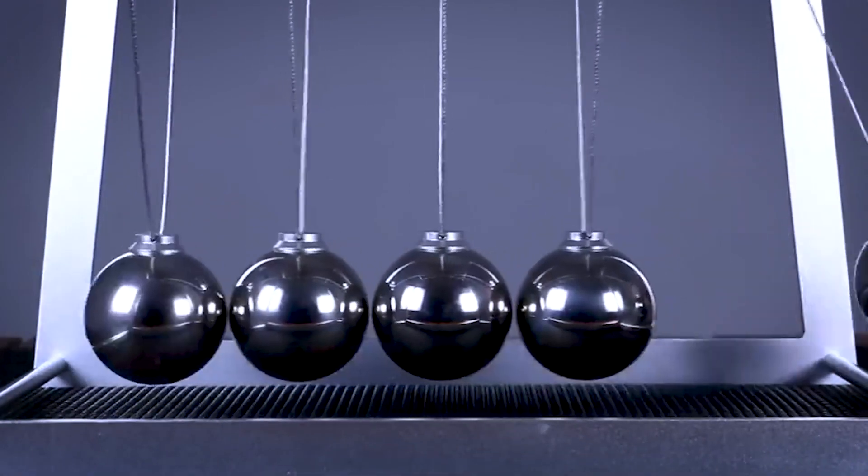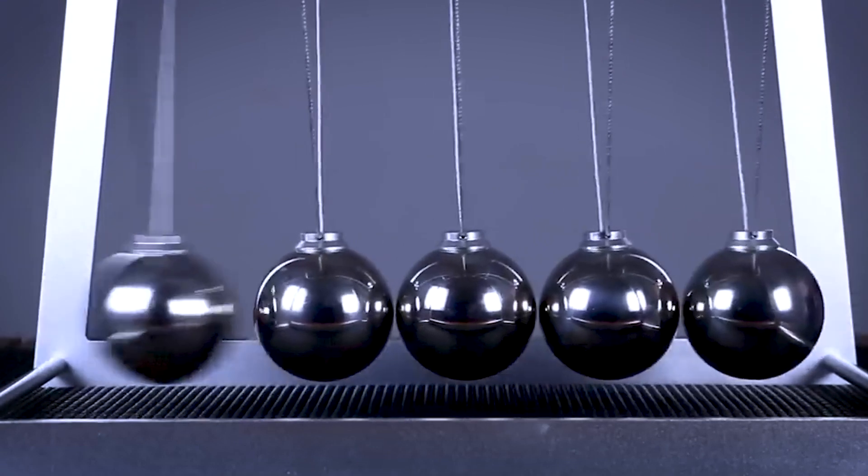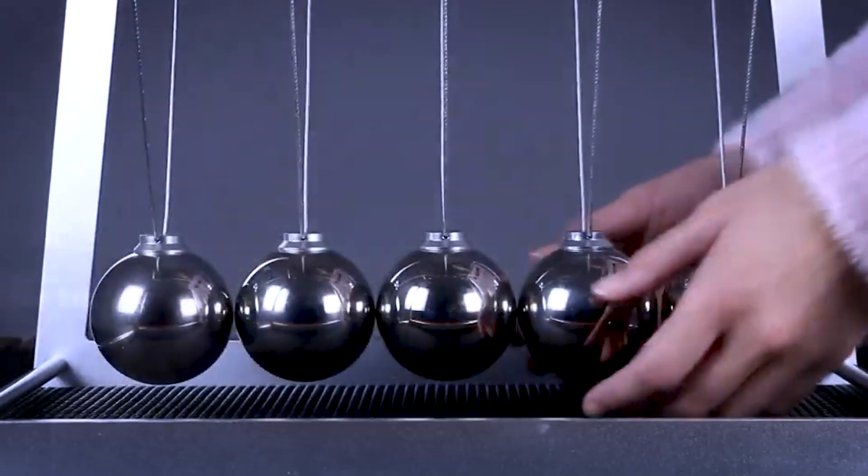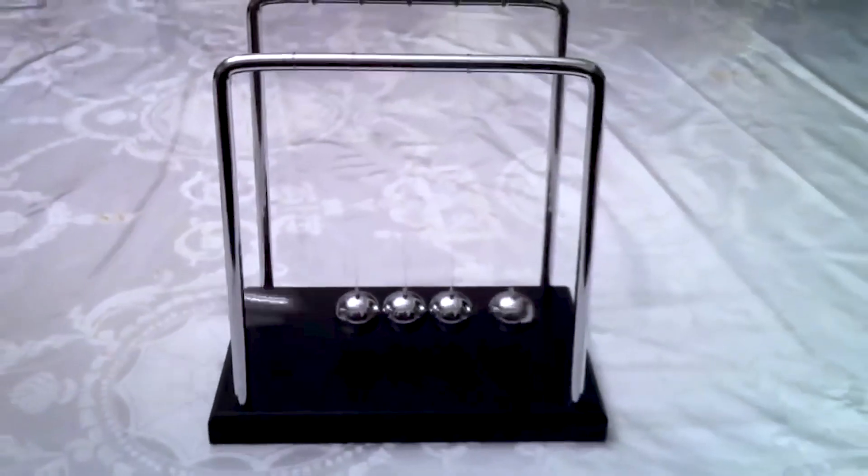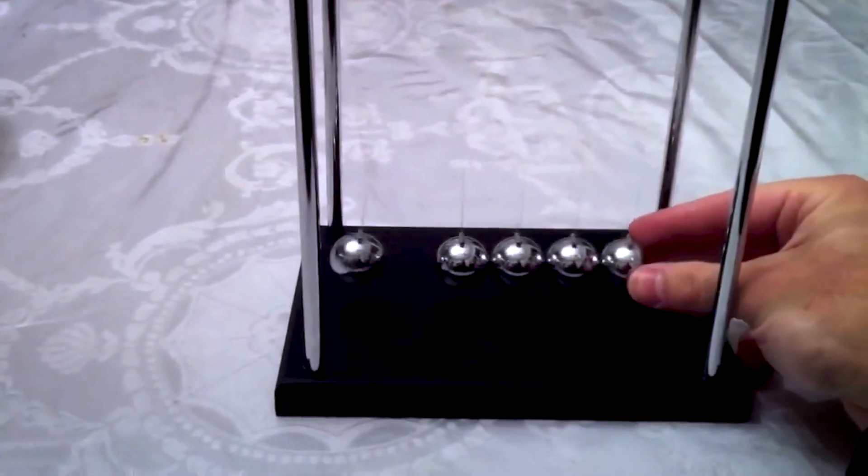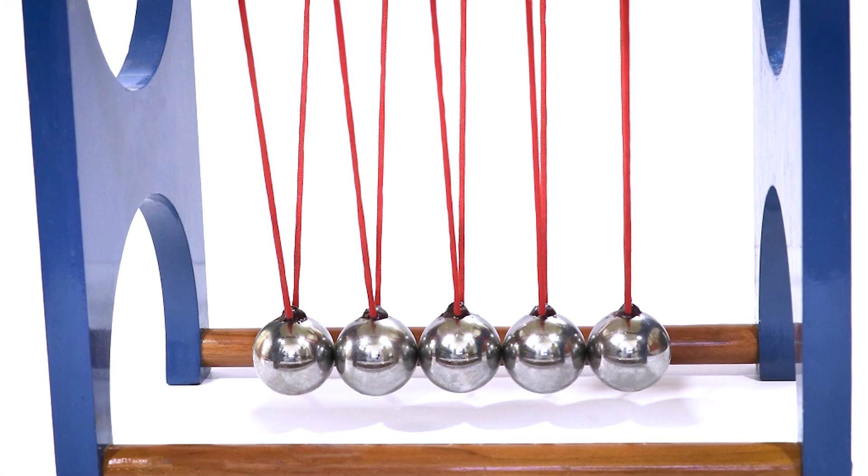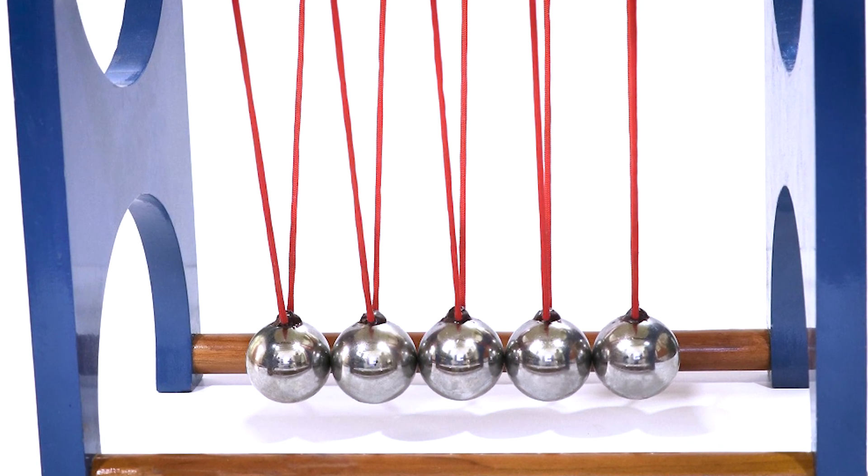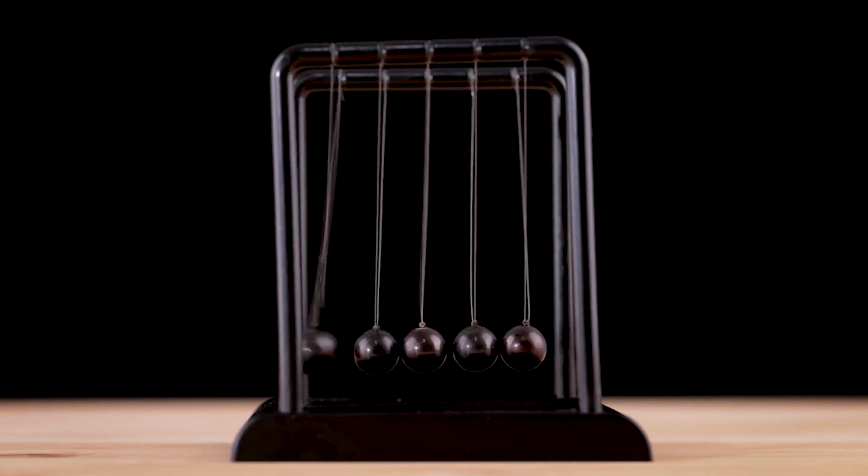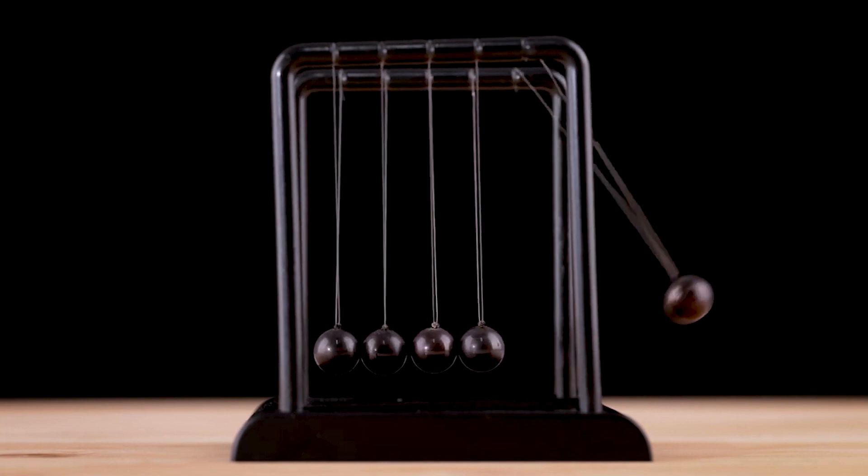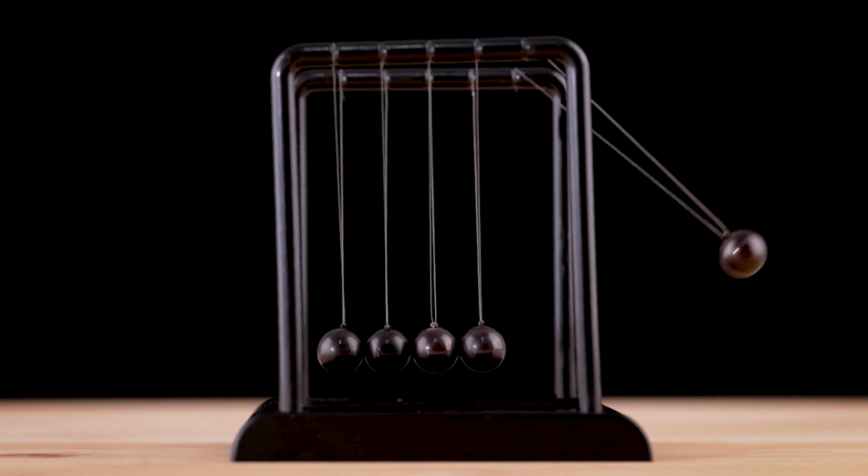If you happen to be an educator, this gadget proves to be an invaluable aid in teaching students about the fundamental laws of motion outlined by Sir Isaac Newton. Made from sturdy stainless steel, this particular version boasts a striking reflective surface on the interconnected spheres. Gazing into the arrangement, it becomes nearly impossible to resist catching a glimpse of yourself within its mirrored allure. Newton's Cradle stands as a testament to the enduring fascination with scientific concepts and serves as a captivating visual reminder of the intricate workings of motion.